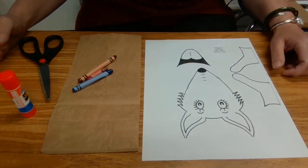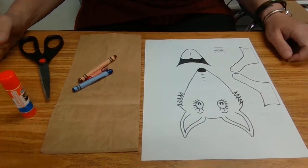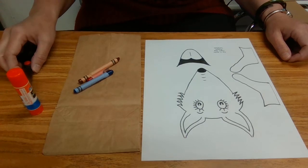Today's activity is a fox paper bag puppet. What you'll need is your printout of your fox face, paper bag, colors, glue, and scissors.